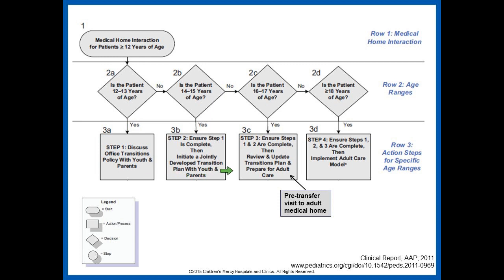A critical component of the plan in a perfect world is to schedule a pre-transfer visit to the adult hospital, adult center, or adult clinic. That interaction is exceedingly important because it begins to allow for the development of a relationship between the child, the parent, and the adult care providers. Then at around age 18 or more, you implement the adult care model. This gives a good high-level approach to the transition process.